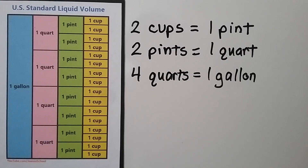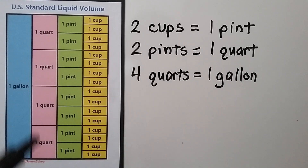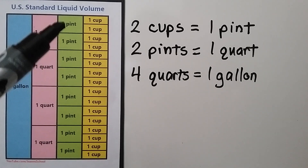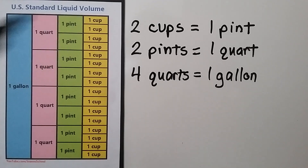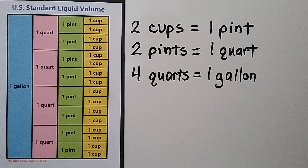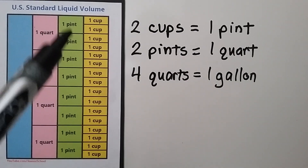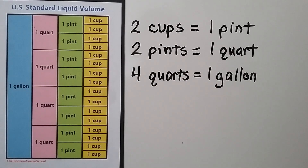For US standard liquid volume, a gallon is equal to four quarts. Each quart is equal to two pints and each pint is equal to two cups. So two cups equals a pint, two pints equal a quart, and four quarts equal a gallon.